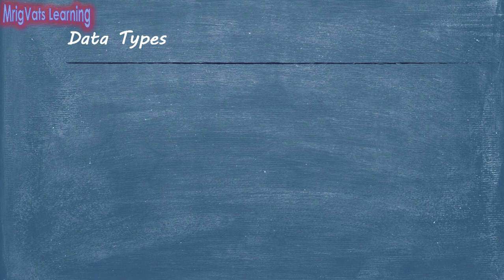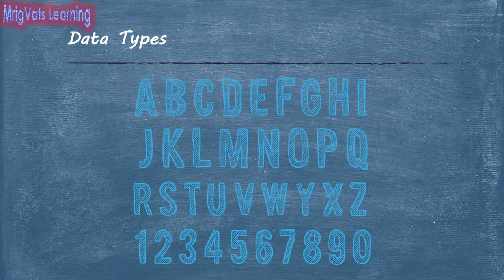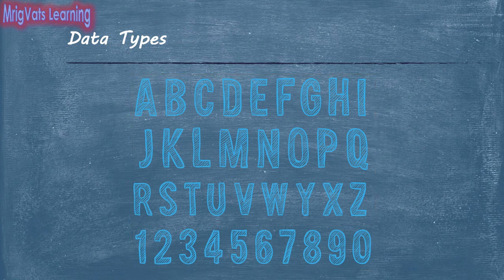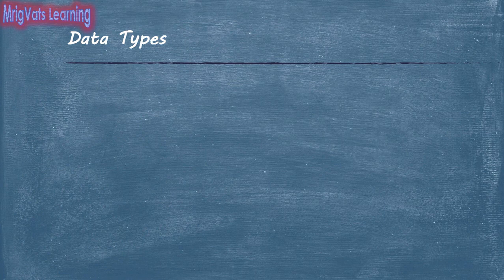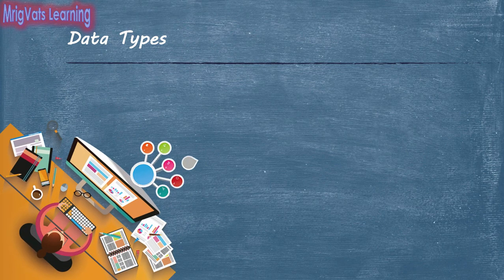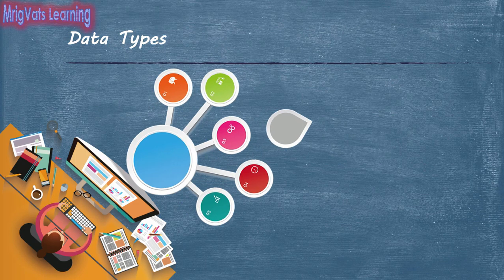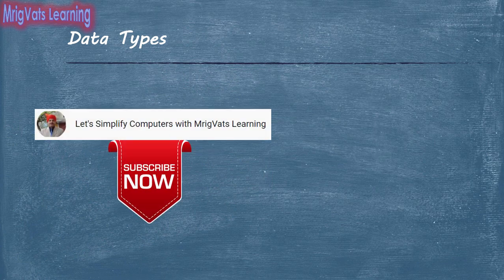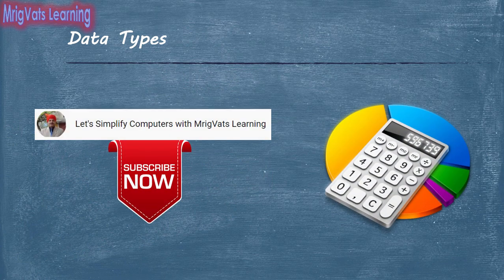Irrespective of whether it is a constant or a variable, values are either in text or numeric form. In a program, you use text form to display any alphanumeric content, which includes text as well as numbers, as a message or prompt to the user. However, you need specialized variables to hold data that you accept from the user. The type of data you need to store in a variable defines its data type. Broadly, you can categorize data types as text and numeric.